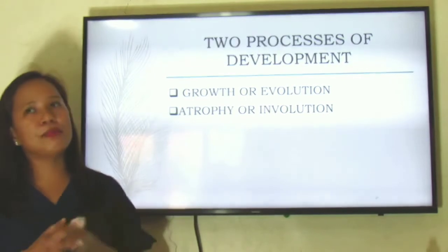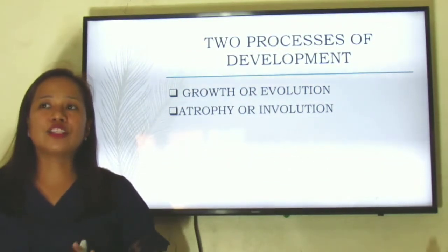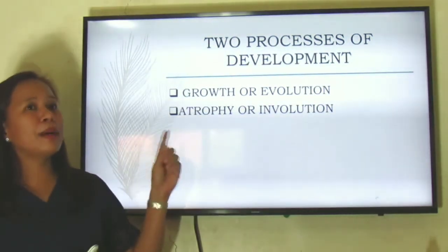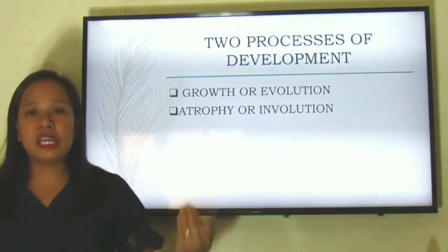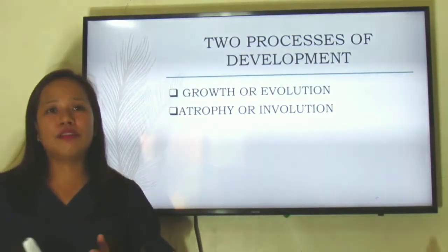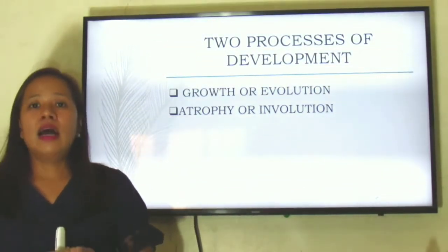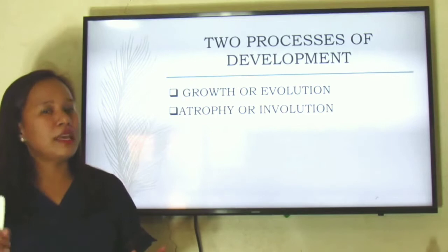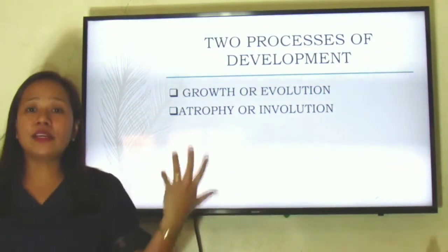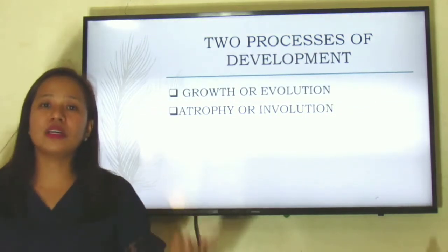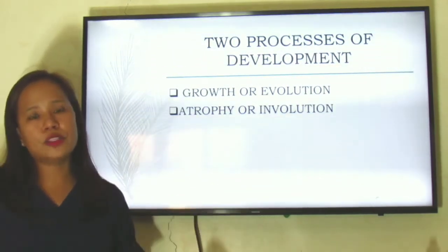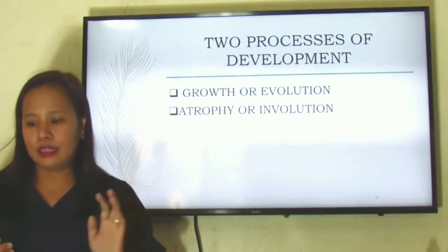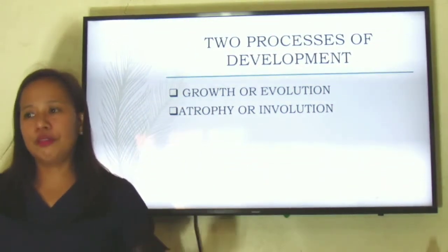In atrophy, there are conditions called atrophic diseases. This is the period when our body and even our mental state begin to decline. Those who are already retiring at the age of 60 usually experience this — everything declines: their mental state, their health, and even their physical attributes. So atrophy is the opposite of growth or evolution. Basically, development could either be positive or negative.